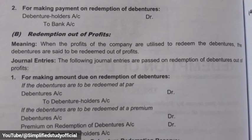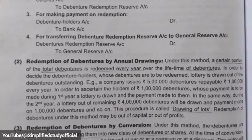The last entry for the first method is for transferring the Debenture Redemption Reserve: Debenture Redemption Reserve Account debit to General Reserve Account. This completes the first method of redemption.